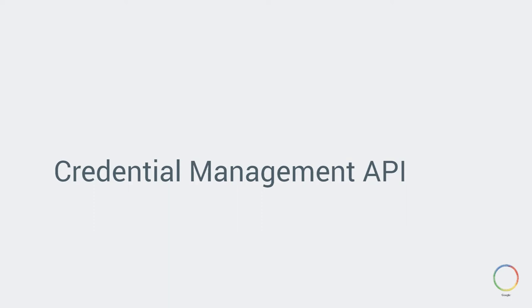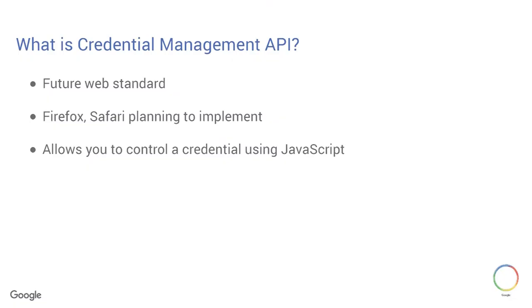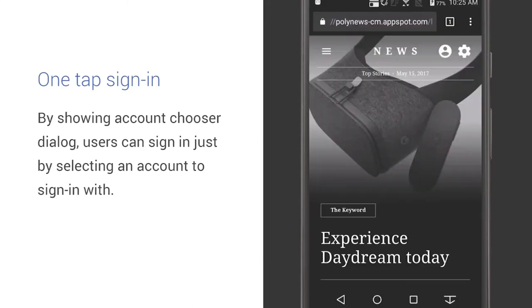The web version of Smart Lock for Password is called Credential Management API, and this is the biggest topic I'm going to talk about today. The Credential Management API is a future web standard, currently implemented in Chrome but coming to Firefox and Safari in the future. It allows you to control credentials using JavaScript on behalf of the user. There are roughly three benefits: one is one-tap sign-in — by showing an account chooser dialog, users can sign in just by selecting one of the accounts they've used to sign in in the past.